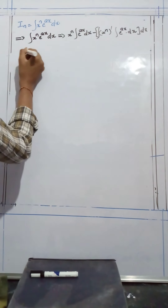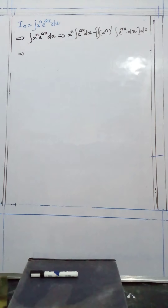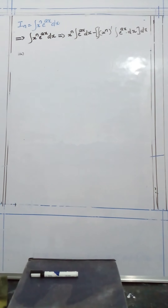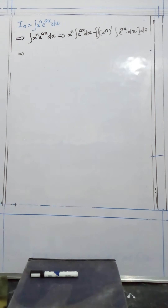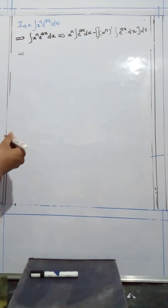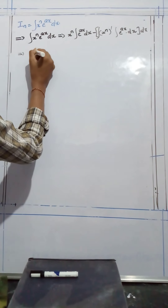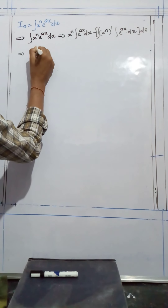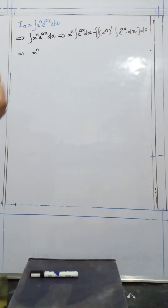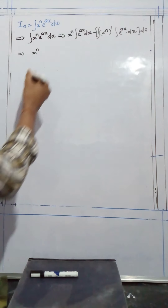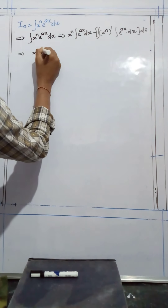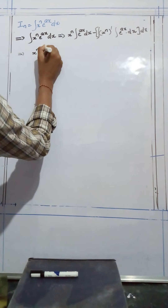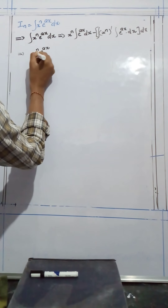Now come to the next step. The first step is completed. Then the second step is: x to the power of n, times the integral of e to the power of ax, which is nothing but e to the power of ax.